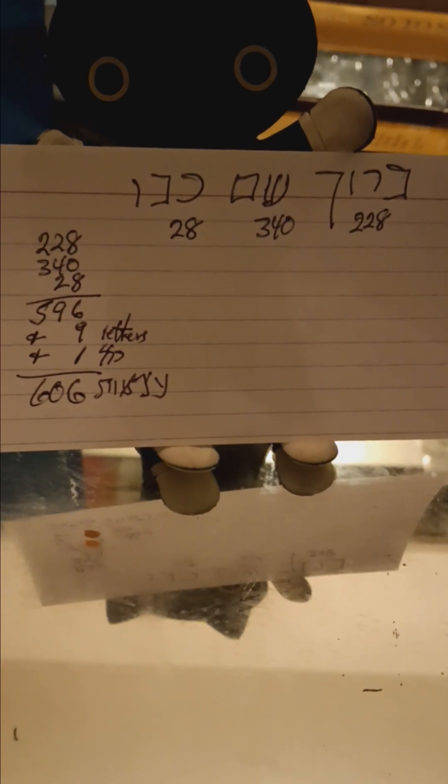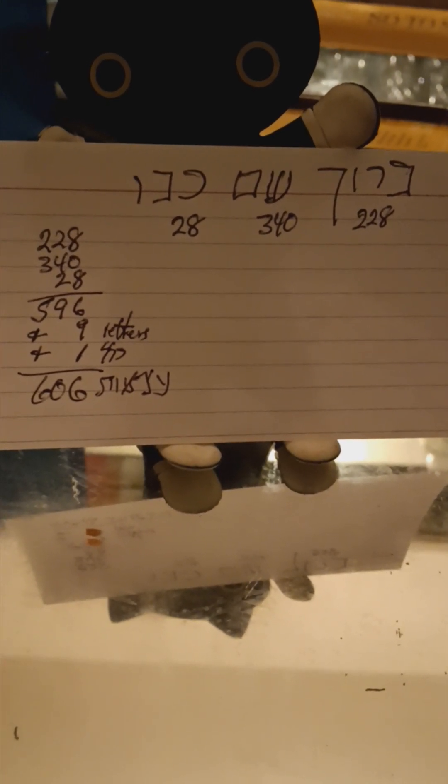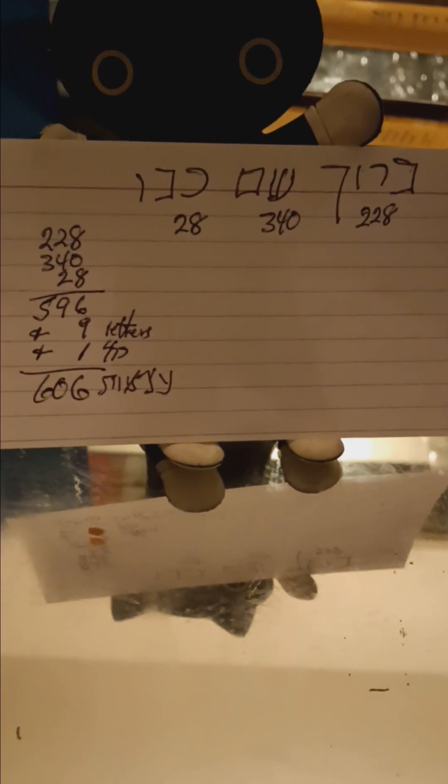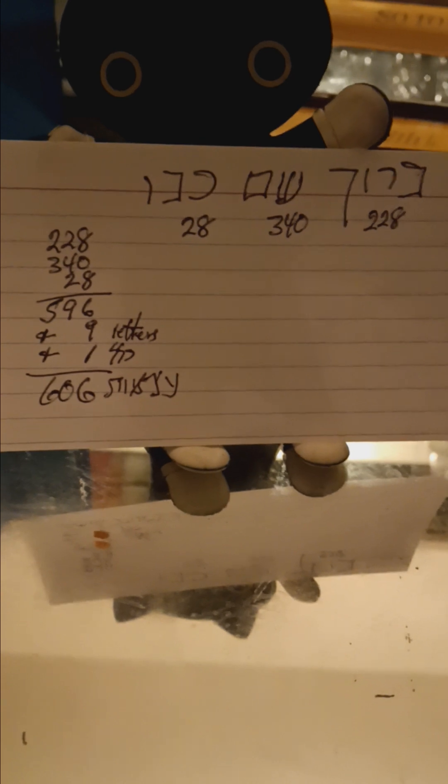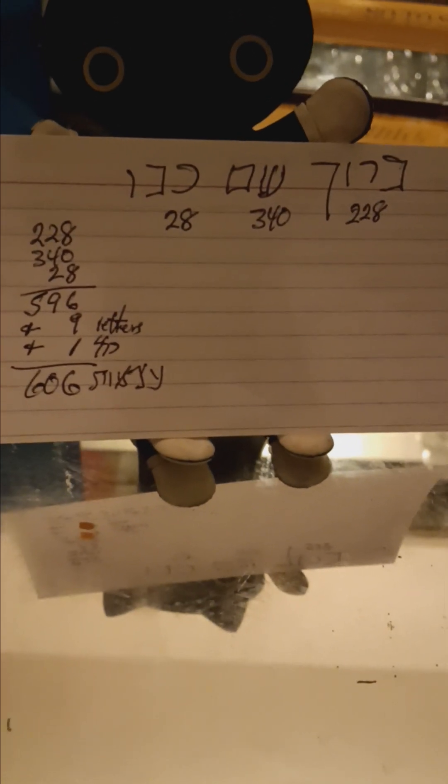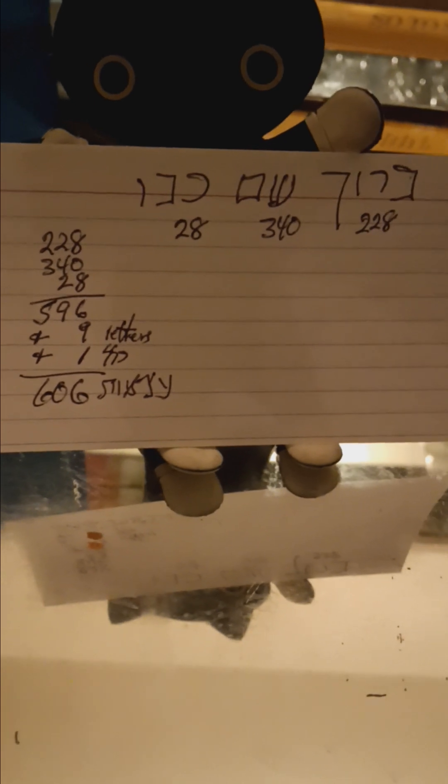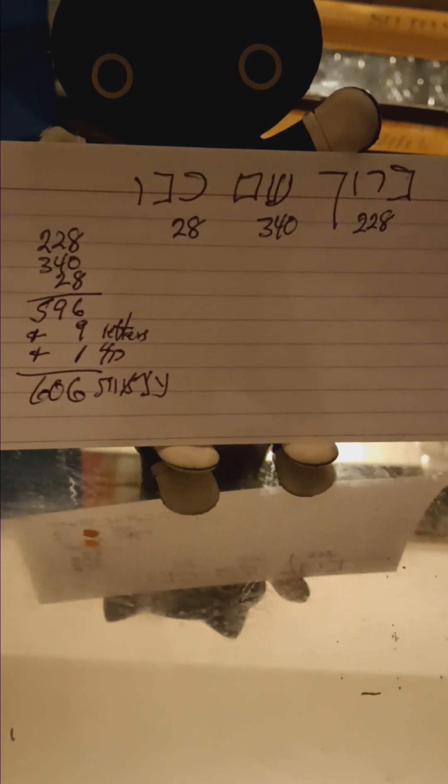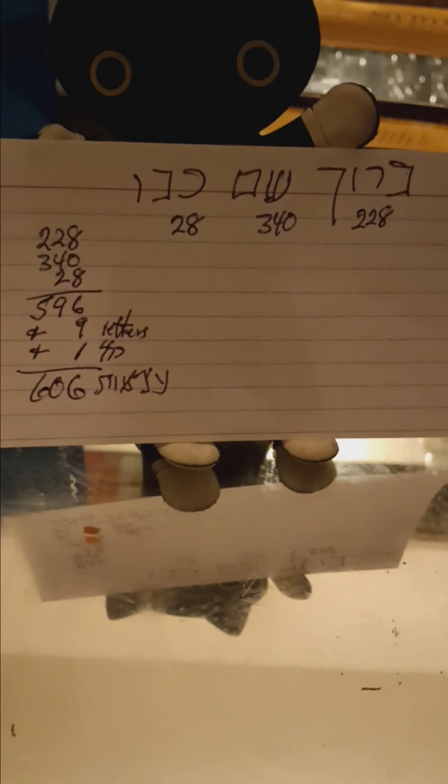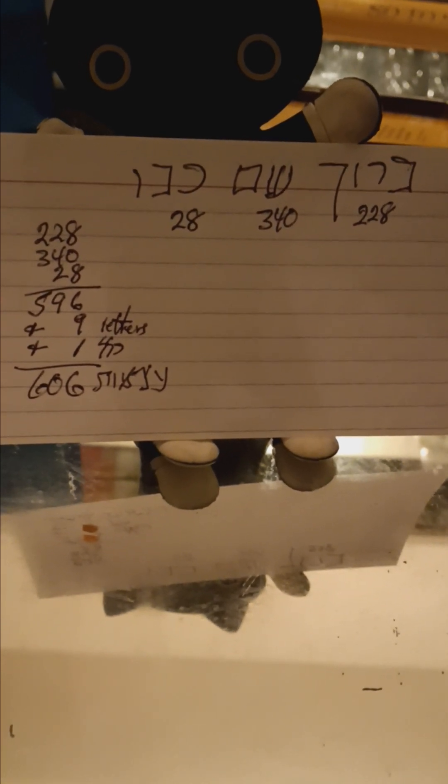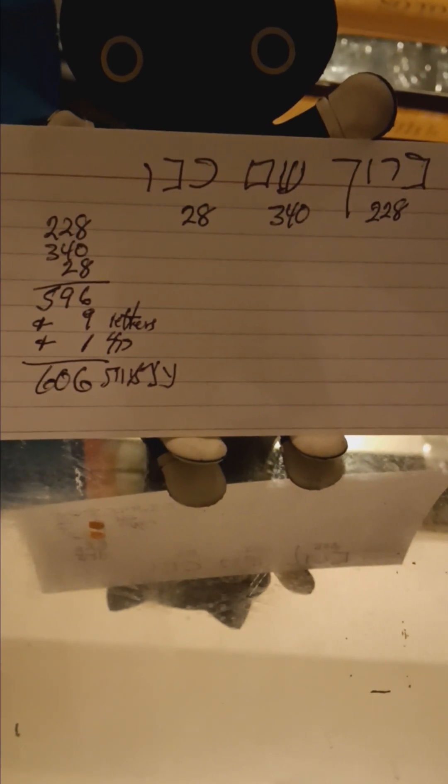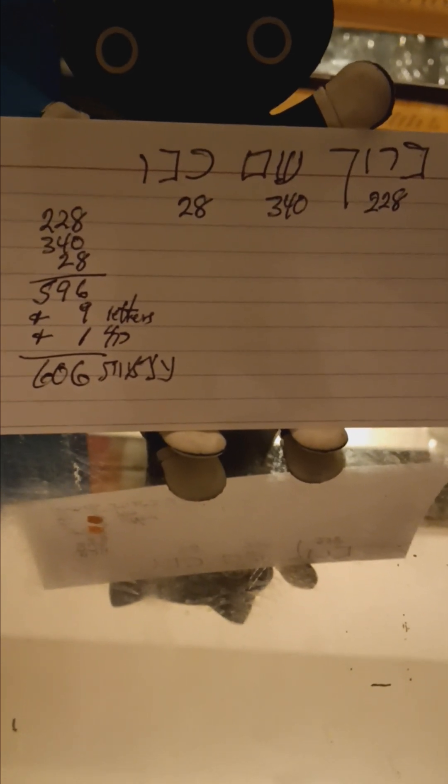Today is the 9th of Keslev. That means it's the 9th day of the silent days of Hanukkah, of the 24 silent days of Hanukkah, which come and relate to the phrase Baruch Shem Kavod Malkuto Liyoilam Ve'ed. So today we're at the 9th letter, Baruch Shem Kavod, as you can see.